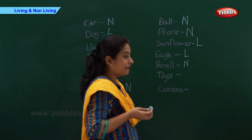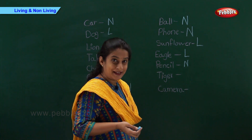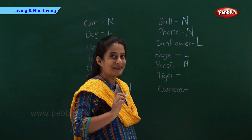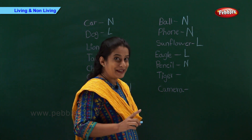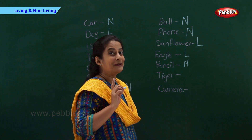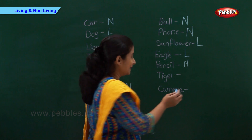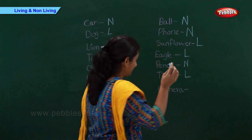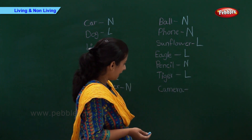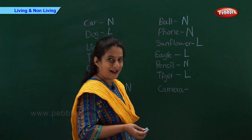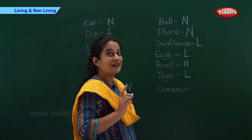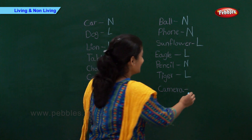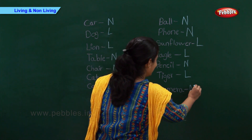And now we have tiger. Can a tiger breathe? Right. Tiger breathes and it grows. So tiger is a living thing. And now we have camera. Can a camera breathe? No. So let's write N.